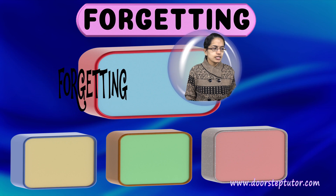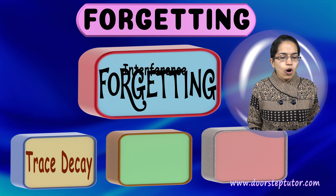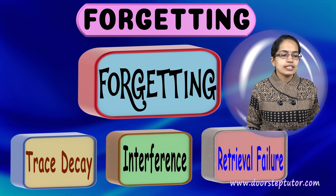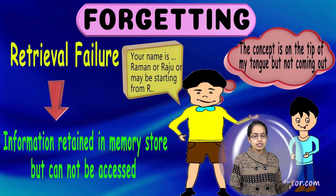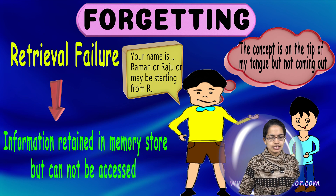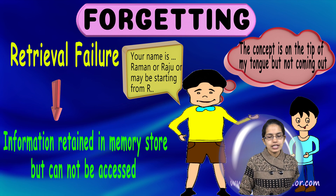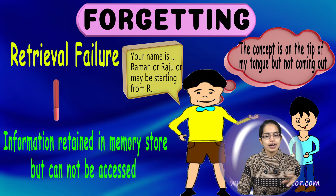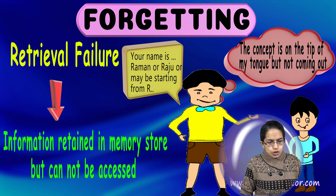Forgetting can occur in three ways: it could be due to trace decay, interference, or retrieval failure. Retrieval failure is where you are unable to think of what was in your mind — there have been traces, but because of the time that has passed or associated concepts forgotten, at the time of recall you are unable to produce those concepts.